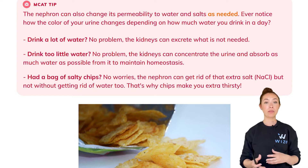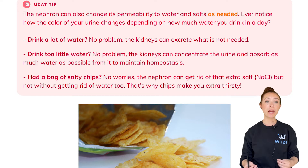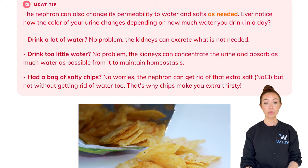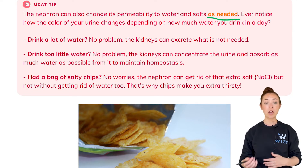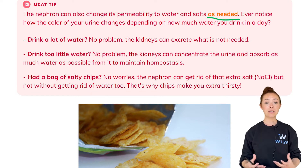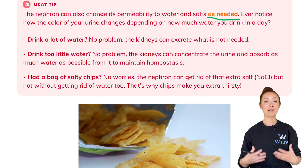We talked about the intrinsic permeability of the nephron, but the nephron is also able to change its permeability to water and salts as needed. This is usually done in response to hormones such as ADH and aldosterone. This is really important — the nephron's ability to change its permeability based on our body's needs is what ensures that we don't have to drink gallons and gallons of water every day in order to stay hydrated.